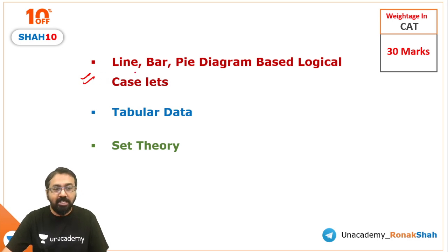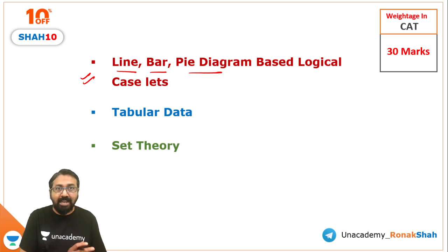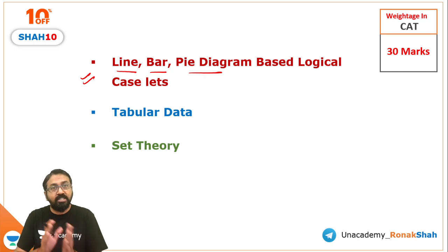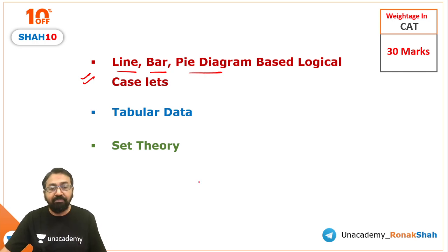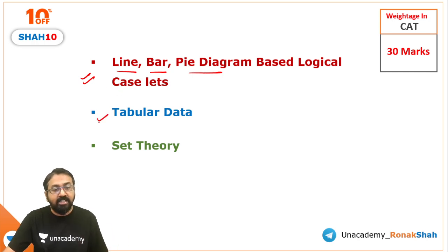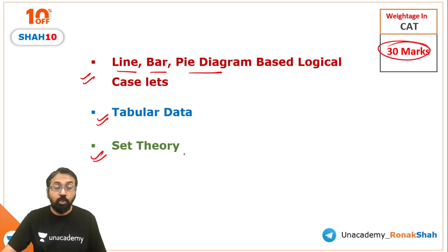Starting from tomorrow, we are going to discuss questions — or you can say case sets — based on line diagrams, bar diagrams, and pie diagrams. These case sets will be more logical in nature rather than calculation-based. If you look at the last couple of years' CAT papers, you will find very few calculation-based DI questions. The focus has shifted to logical reasoning and logic-based DI questions. In fact, looking at the last two years' papers, the weightage of logical case sets, tabular data, and set theory based case sets is close to 30 marks, and that's huge.